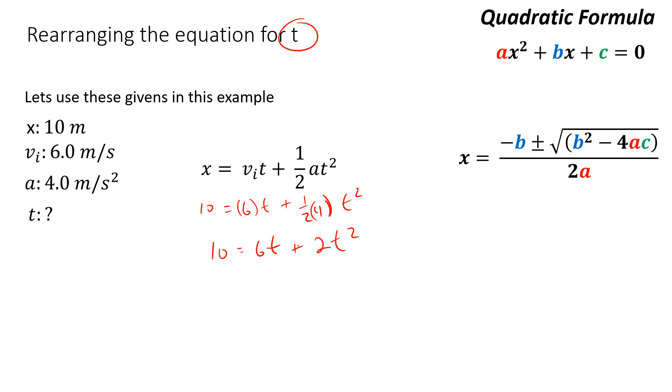I can rearrange that equation by subtracting 6t from both sides and subtracting the 2t squared from both sides. I would end up getting minus 2t squared minus 6t plus 10 equals 0. Then I multiply everything by negative 1 to get 2t squared plus 6t minus 10 equals 0. Now I have my a for the quadratic formula which is 2, my b which is 6, and my c which is negative 10. Then I could use the quadratic formula to get my answer. So it's a little bit more difficult.